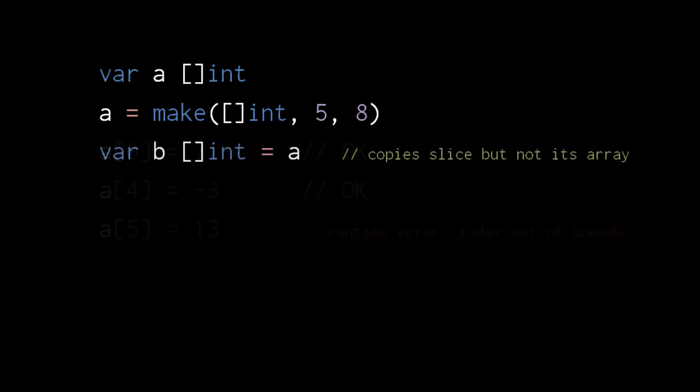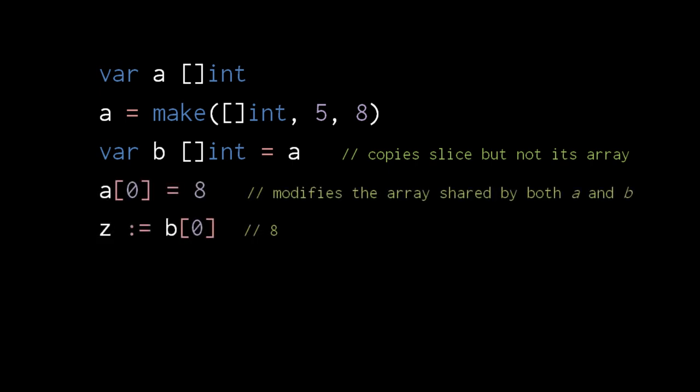If we create a second slice of ints, variable b, we can assign a to b. But be clear that this only copies the slice value, not the array referenced by the slice. Because a and b both reference the same underlying array, accessing indexes through either a or b accesses the same storage. Here, assigning 8 to index 0 of a also effectively assigns 8 to index 0 of b.